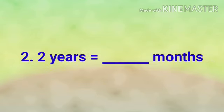Number 2: 2 years is equal to dash months. Yes children, 1 year has how many months? Yes, 1 year has 12 months. So 2 years how many months? Yes, you have to multiply 12 into 2 to get your answer.